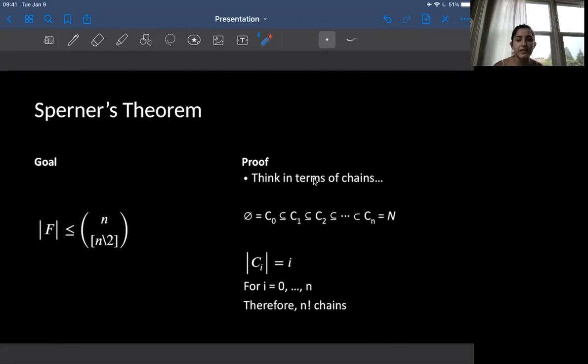So we're going to let, in this case, we're going to let a be an element of F, and we're going to try and figure out how many chains contain a. And this also should be kind of intuitive. So how many chains are there between the empty set and a? And we're going to find that if a contains k elements, then there is going to be k factorial times n minus